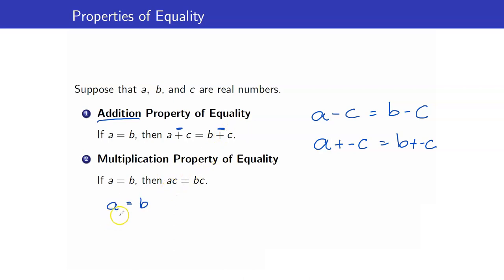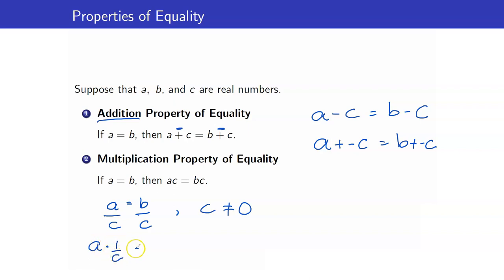Similarly, we can divide both sides by C and the resulting equation is still true, of course assuming C is not equal to zero. This is because A over C is the same as A times 1 over C, and B over C is the same as B times 1 over C — division is multiplication by the reciprocal. So we can always perform the same operation on both sides of the equation: addition, subtraction, multiplication, or division.